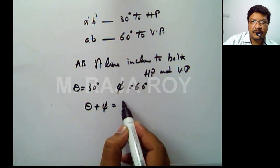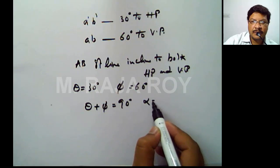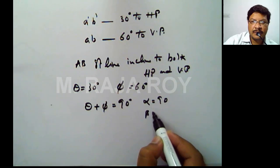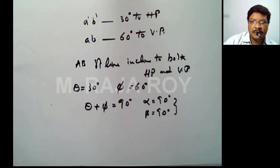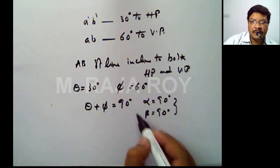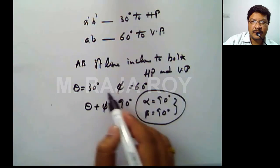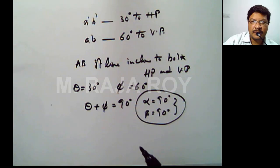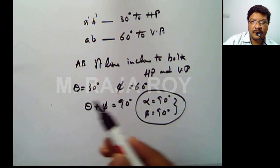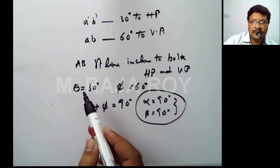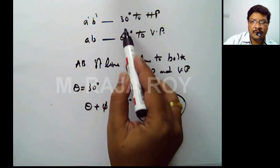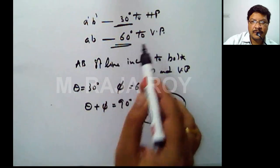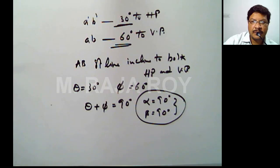We have one condition: when theta plus phi equals 90, then automatically alpha equals 90 and beta equals 90 — the apparent angles will become 90 degrees. You have to take the help of this condition to solve this problem. When the circular surface has one particular diameter inclined 30 degrees to one reference plane and 60 degrees to the other, assume in this problem that diameter AB is making 30 degrees with HP and 60 degrees with VP.